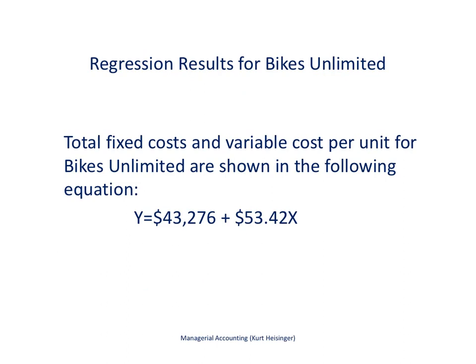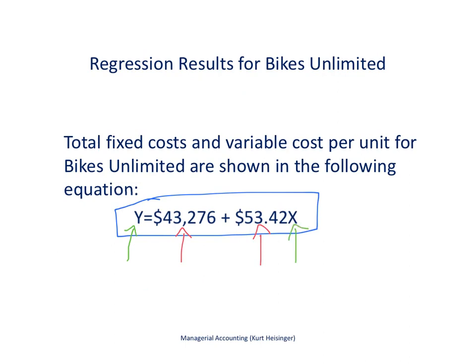Here are the results of the regression analysis based on the information from the previous slide. The cost equation is right here. Our total fixed costs are estimated to be $43,276, and our variable cost per unit is estimated to be $53.42. Once we have this information, we can estimate our total costs, y, by plugging in the expected level of production, x. For example, let's say we expect to produce 4,000 units next month.